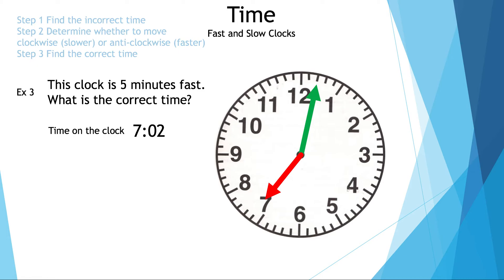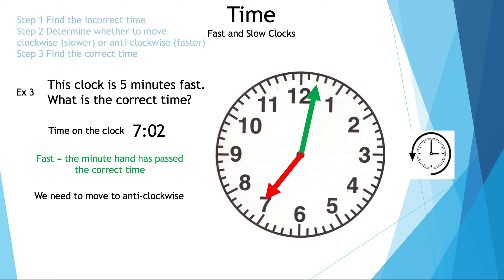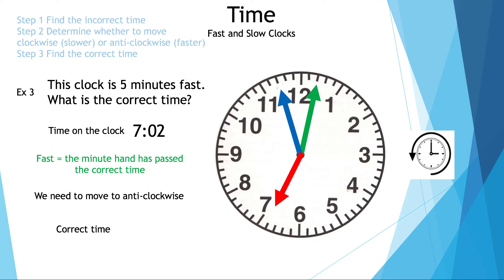The vocabulary: fast means the minute hand has passed the correct time, so we need to go backwards or anti-clockwise to find the correct time. Moving backwards five minutes: one, two, three, four, and five minutes, which means the correct time is 6:57.